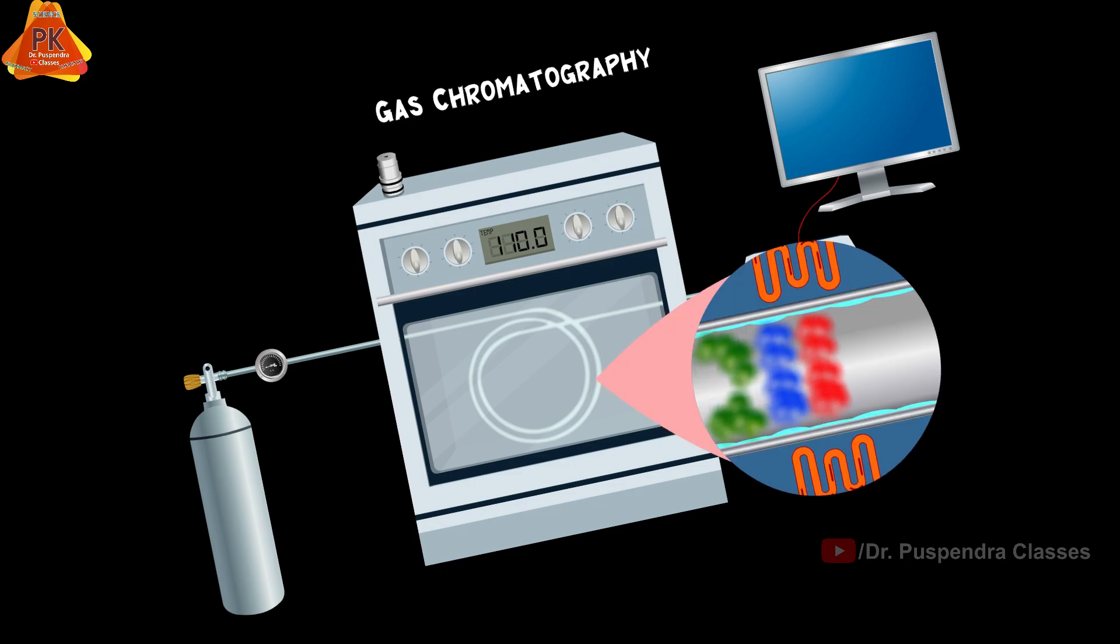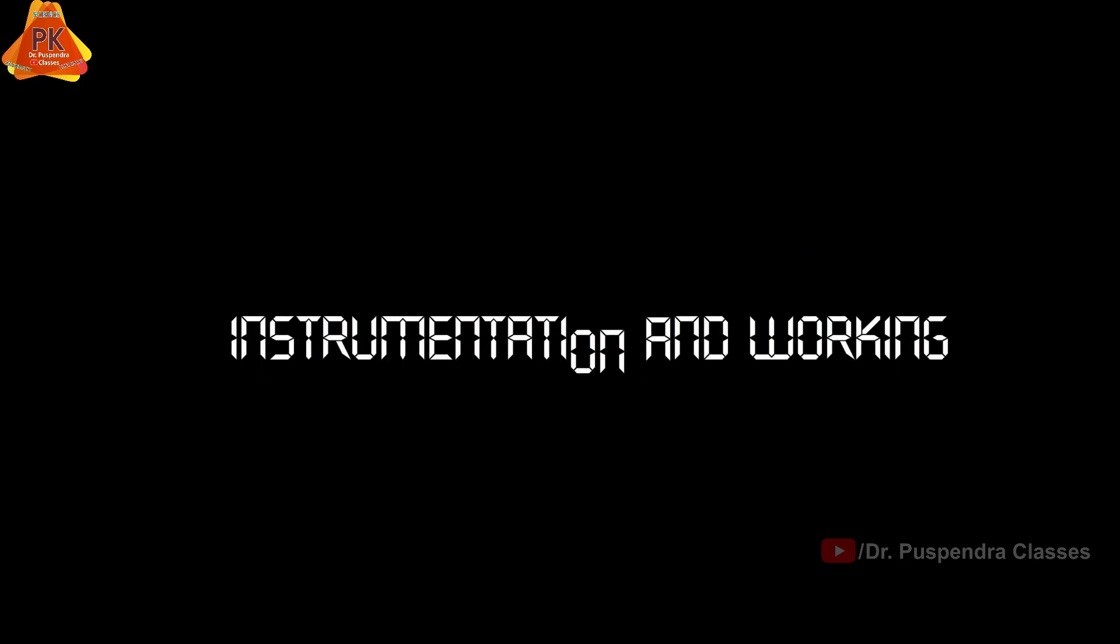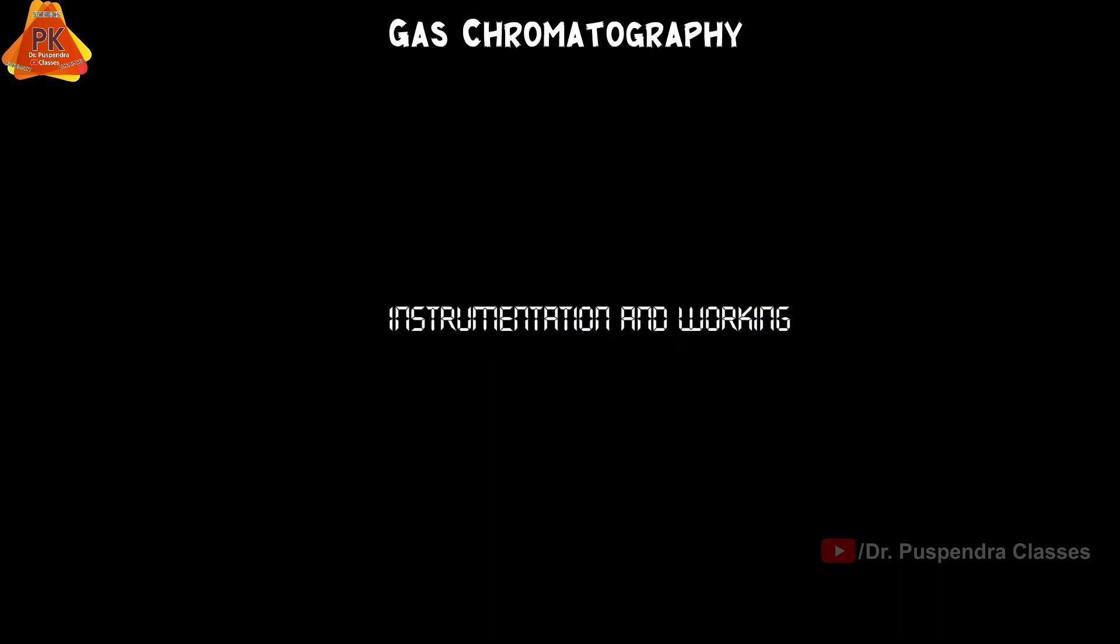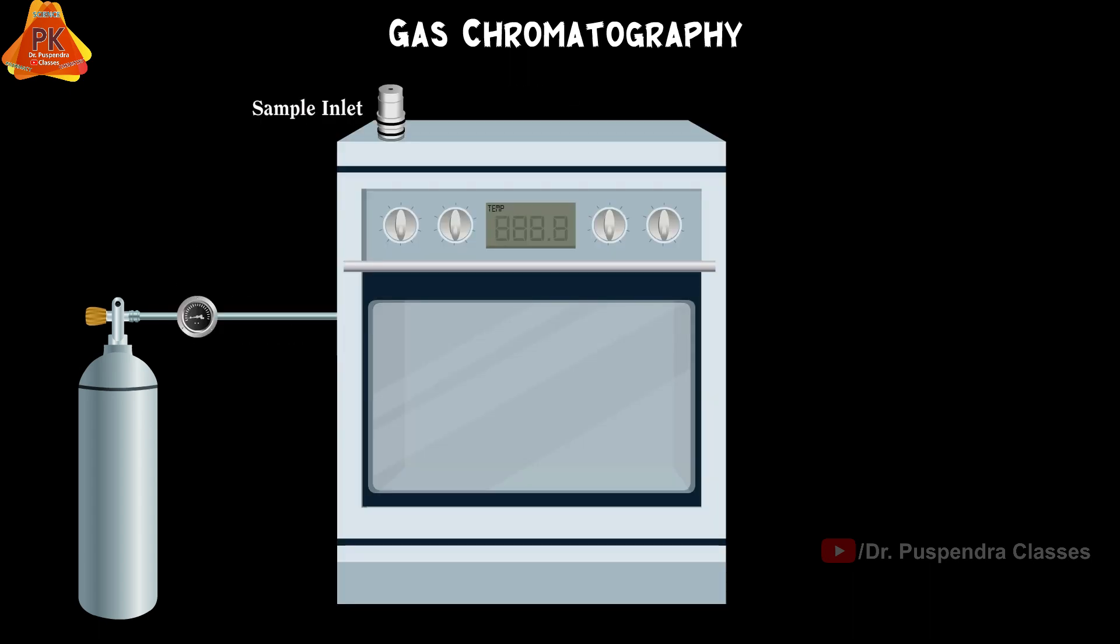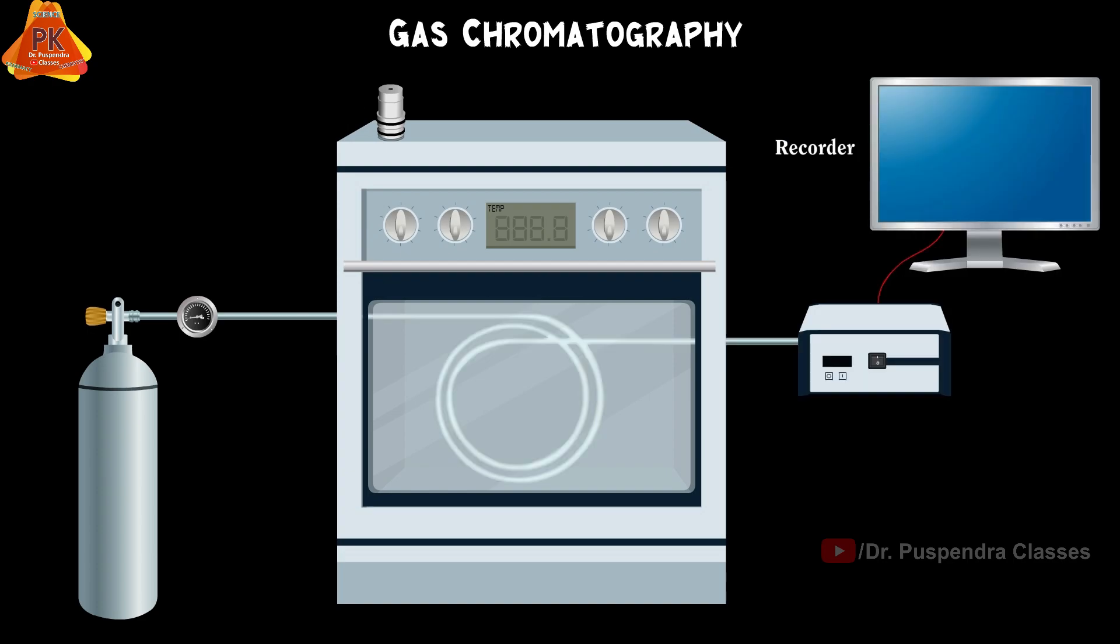In this animation, we're going to explain the instrumentation and working of gas chromatography or GC. The GC instrument is constructed by various parts which are: gas tank, gas tank valve, gas tube, gas flow controller, GC oven, sample inlet, GC column, detector, and recorder.